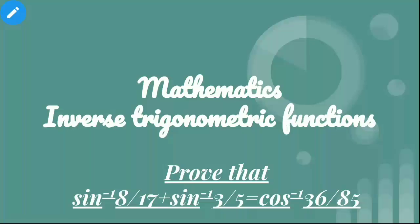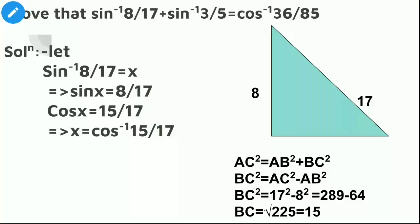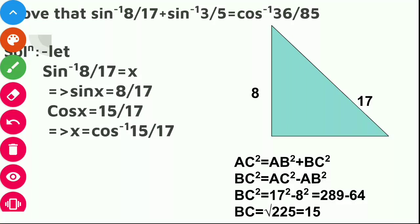Let's see how to solve this question. Here we have supposed that sine inverse 8 by 17 is equals to x. Sine will move to that side, it will become sine x is equals to 8 by 17. We know that sine is equals to perpendicular upon hypotenuse. Here perpendicular is 8 and hypotenuse is 17.